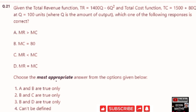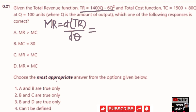First, we need to find marginal revenue and marginal cost. The total revenue function is given, so marginal revenue is the derivative of the total revenue function with respect to quantity: MR = dTR/dQ. The derivative of 1400Q is 1400, and the derivative of 6Q² is 6 × 2Q = 12Q. Therefore, MR = 1400 - 12Q.